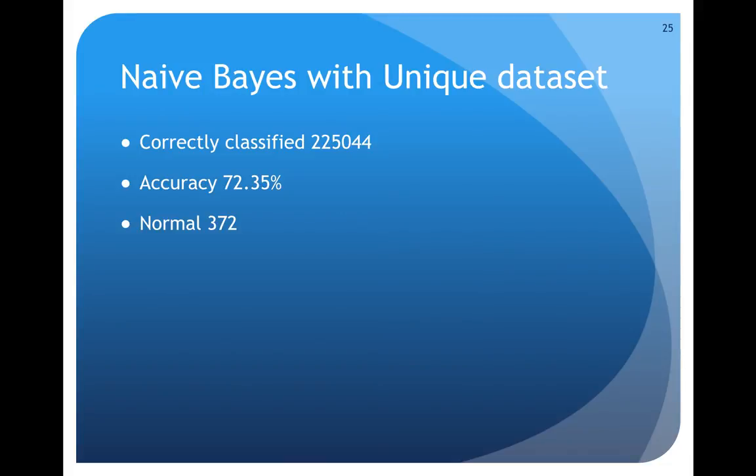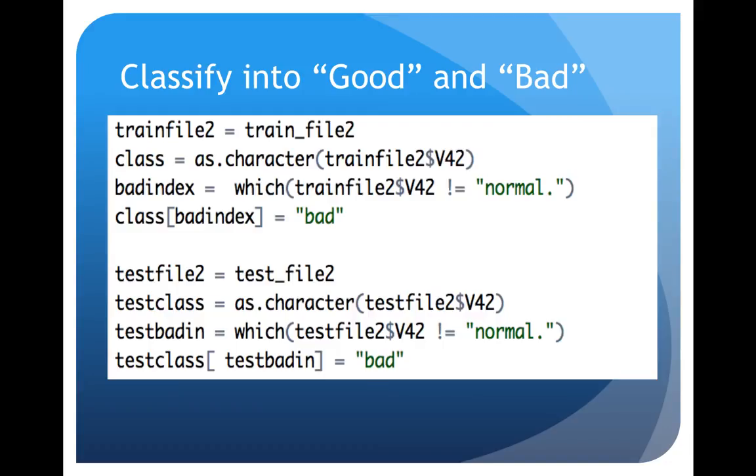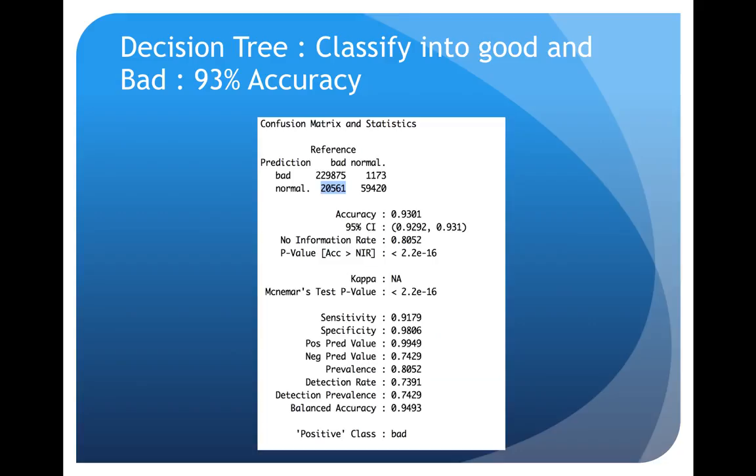Then I thought of distinguishing between good and bad connections instead of directly classifying connections into the attack types. So I converted all non-normal records as bad and I used decision tree with this new data and I got 93 percent accuracy, which is really good.